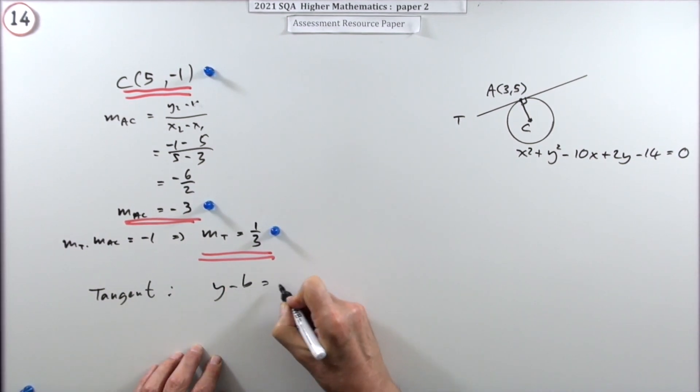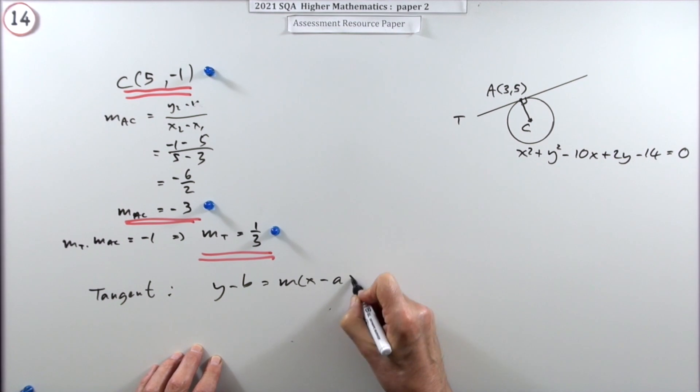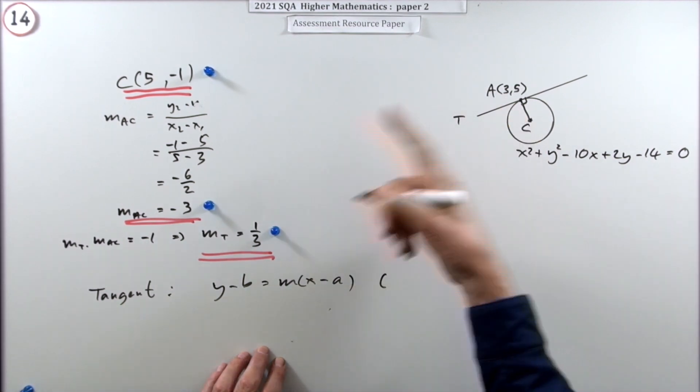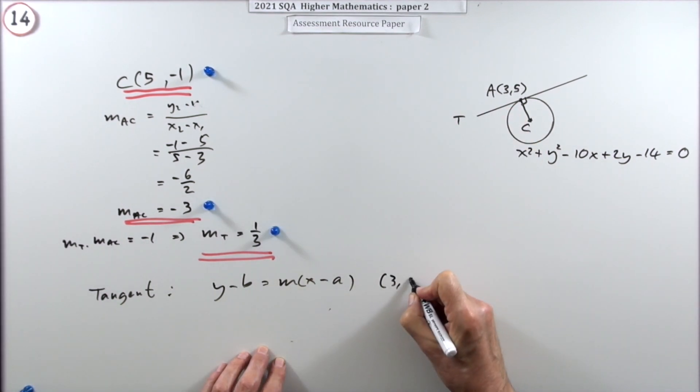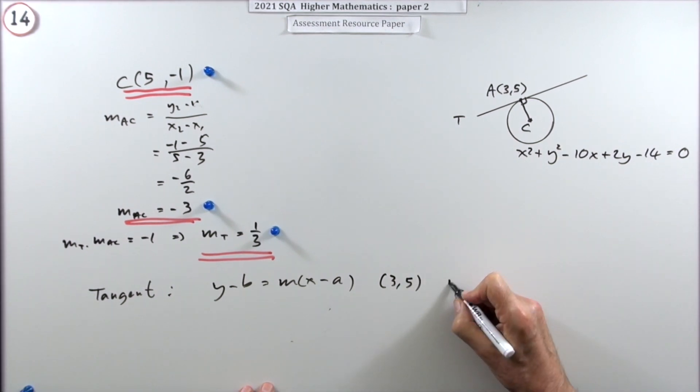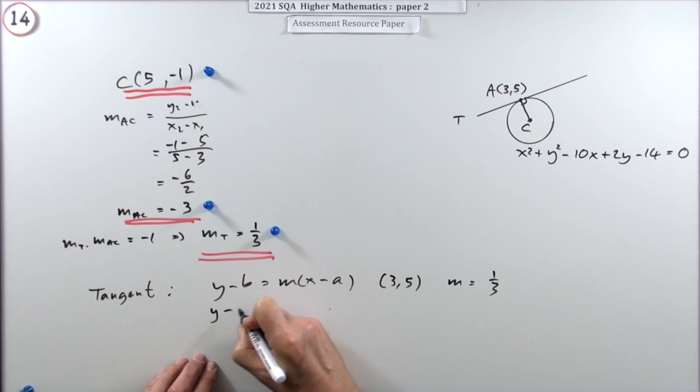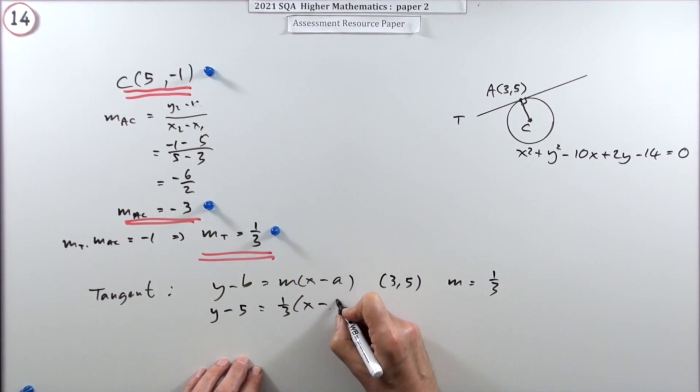So, y minus b is m(x minus a), make sure you use the correct point. That's the point (3, 5). And of course, the gradient you're going to be using is one-third. So, y minus the 5 is one-third of (x minus the x), which is the 3.